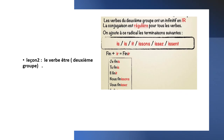Next lesson. Leçon 2. Le verbe être. Le deuxième groupe. In this lesson, we will be learning about conjugating the verb être with the second regular group verbs — la deuxième régulière groupe — which is ending by the letter IR. Le lettre IR.